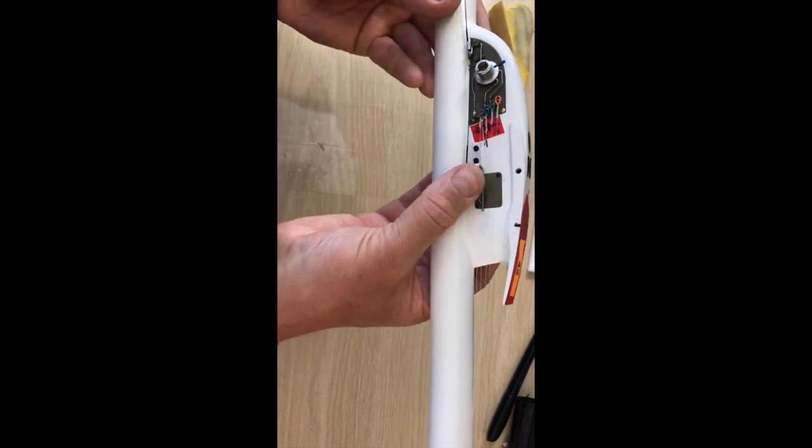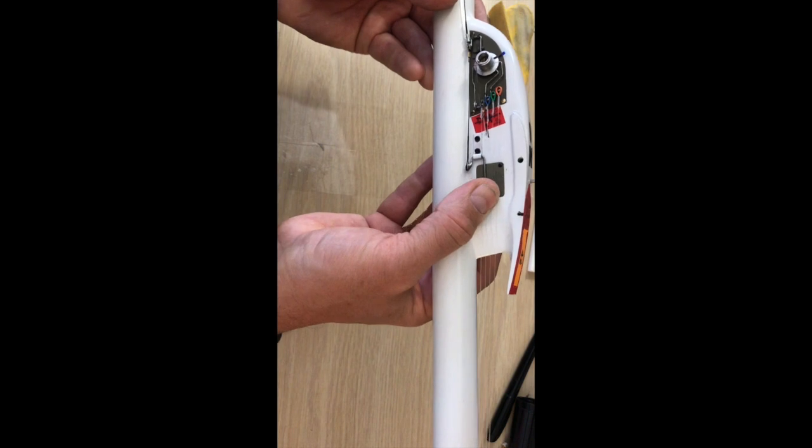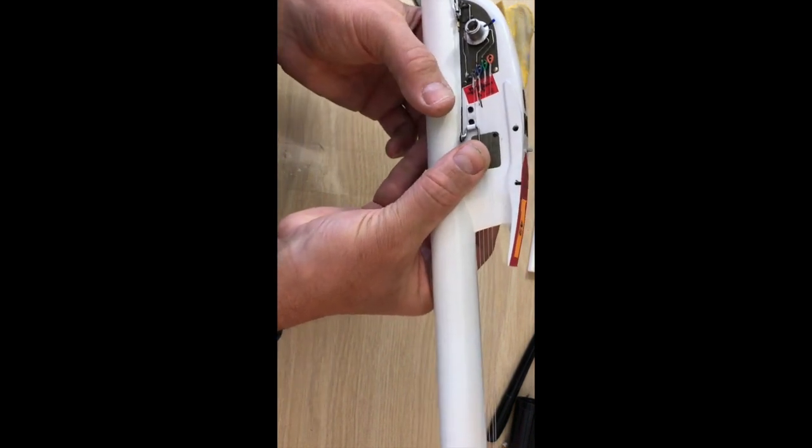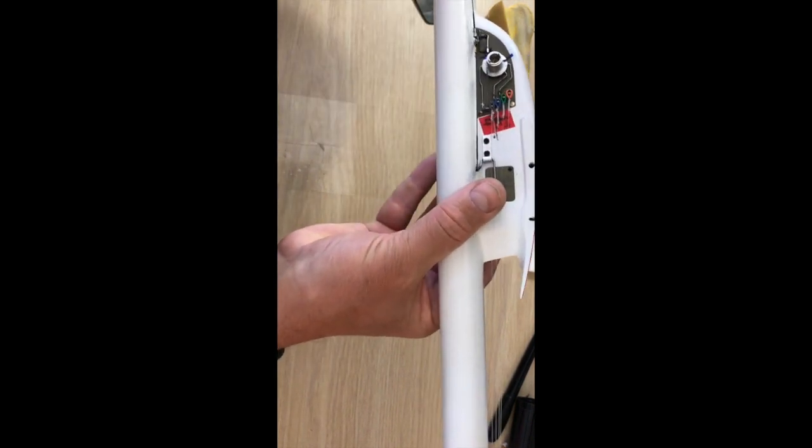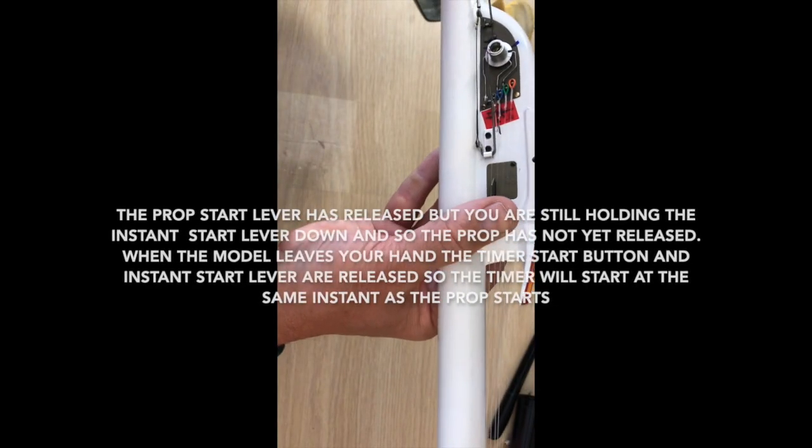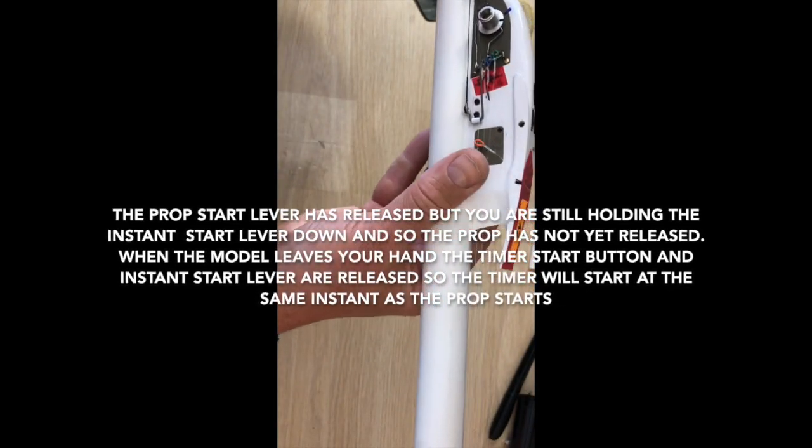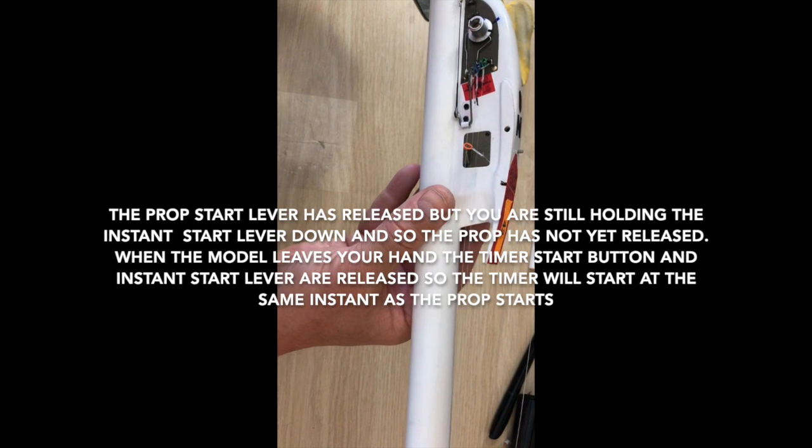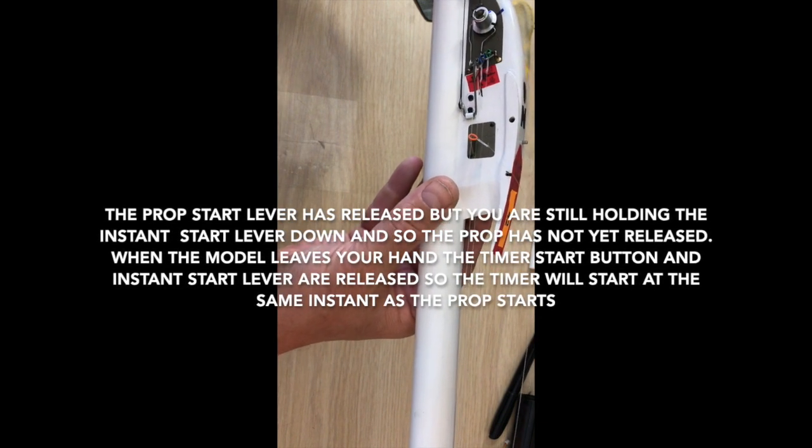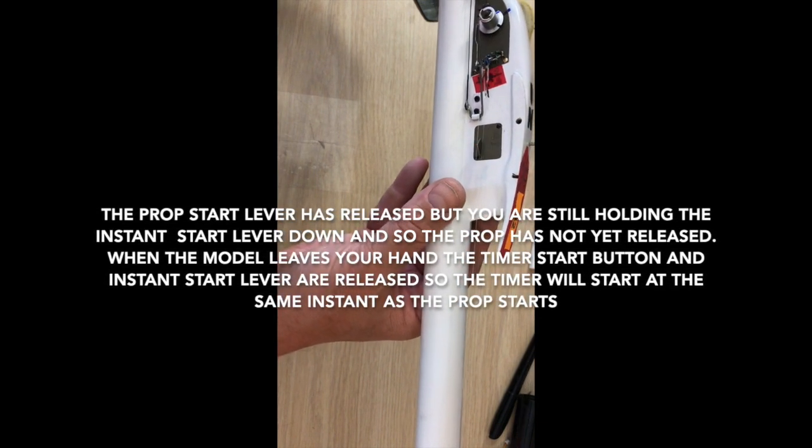So I'm going to release the timer, I'm holding that arm, the prop is gone. I throw it, now the prop has started. There goes the VIT. The stab has not gone up.